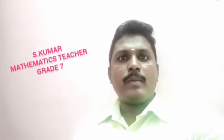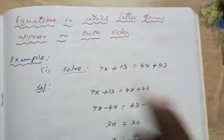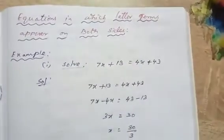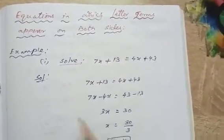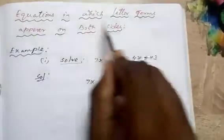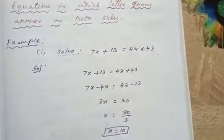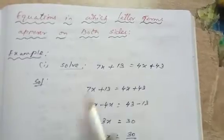Hi students, this is Kuban, your Math teacher for Grade 7. The next topic is equations in which letter terms appear on both sides. Now let us see a few examples.